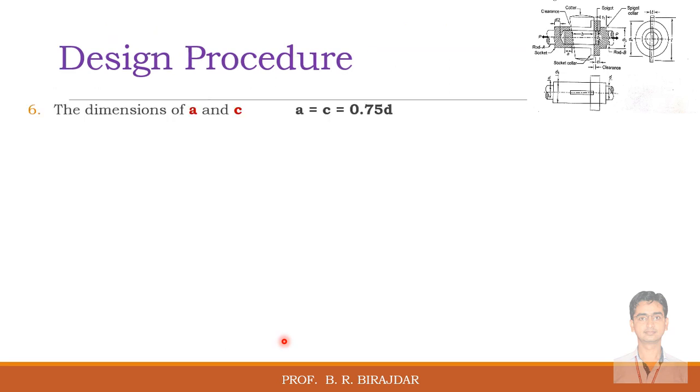Now the dimensions a and c, these are also calculated from the empirical relation, that is a equal to c is equal to 0.75 times the diameter.